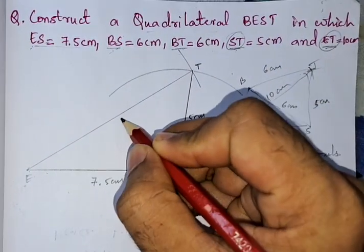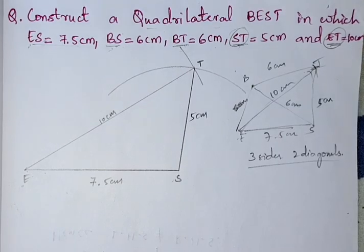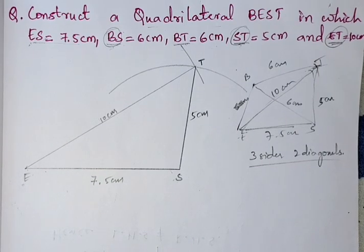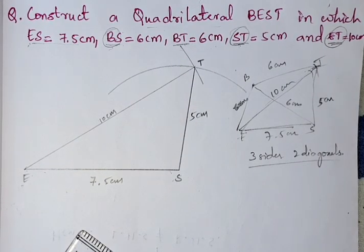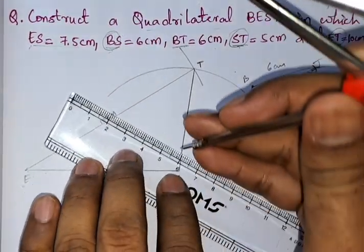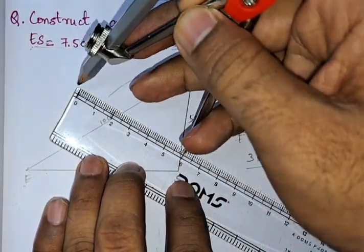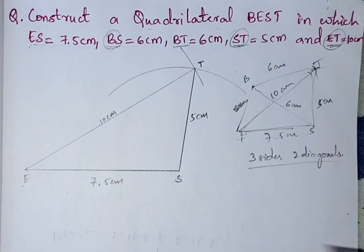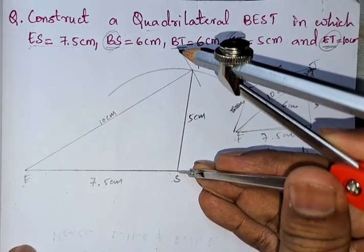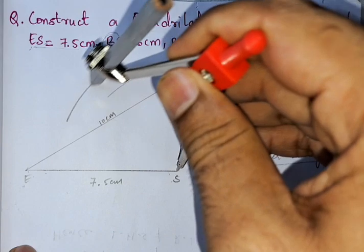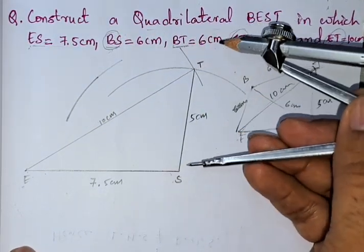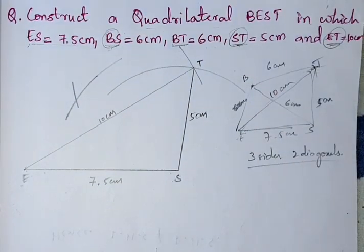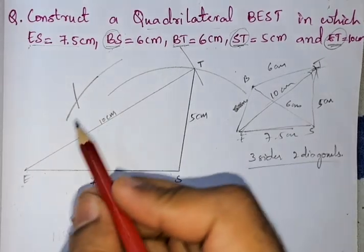Next, BS is the diagonal. From S, we take 6 cm and draw an arc. From T to B is also 6 cm, so from T we draw another arc of 6 cm. The point where these two arcs meet is point B. We join the diagonal BS, marking it as 6 cm, and join BT, which is also 6 cm.